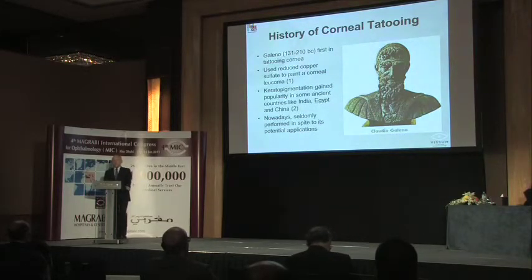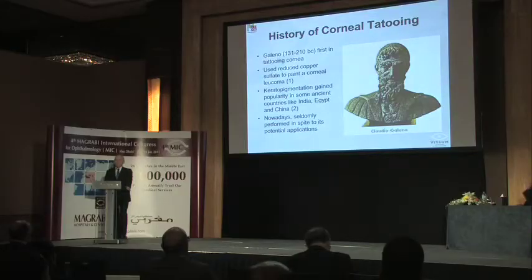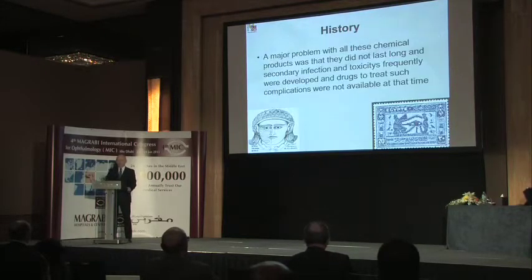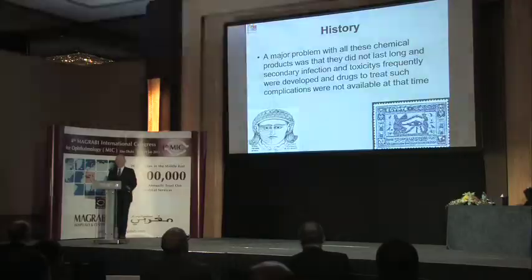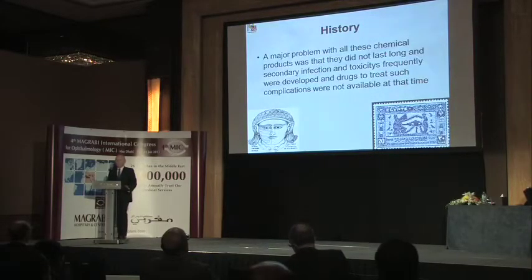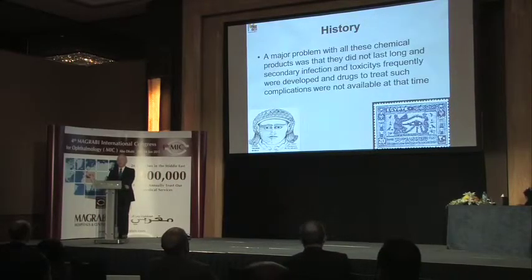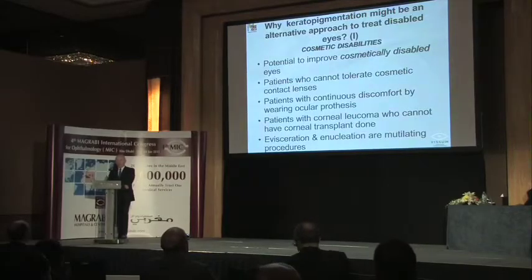This is not a new technique — Galen started this many years ago at the beginning of medicine, and Galen and colleagues already appreciated the importance of using pigments for patients with corneal leukoma. The historical problem since Galen's time is that pigments are not stable, are easily contaminated, can induce changes in the cornea, inflammation, and toxic effects. The problem has always been: which pigments to use? We have different reasons to develop this technique — improving cosmetically disabled eyes in patients with corneal leukomas or opacities who cannot use cosmetic contact lenses or ocular prostheses.